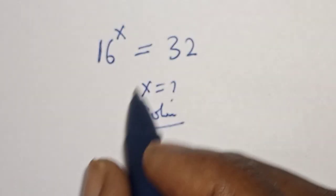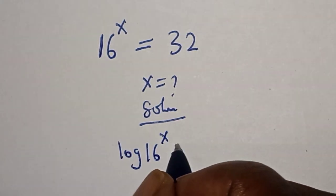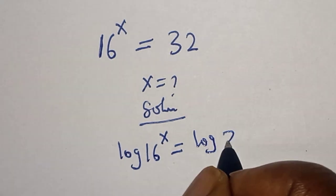Let's take the log of both sides. That is, log 16 raised to power x equals log 32.